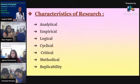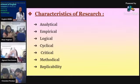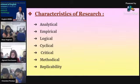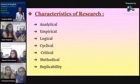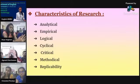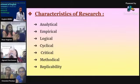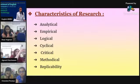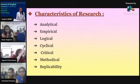Next we look at the characteristics of research. First is analytical — research utilizes proven analytical procedures in gathering data, whether historical, descriptive, experimental, or case study. Second is empirical — empirical research is based on direct experience or observation by the researcher. Third is logical — research is based on valid procedures and principles.